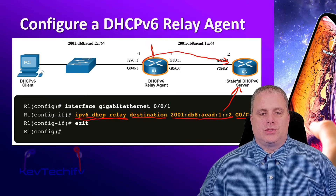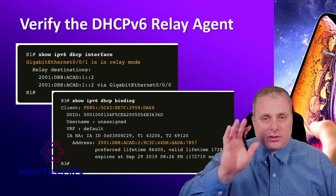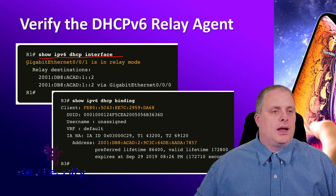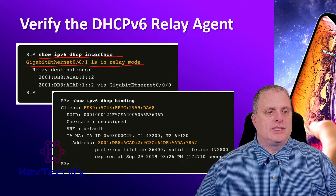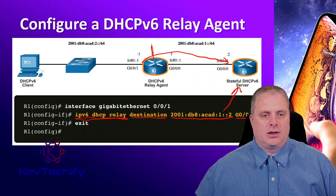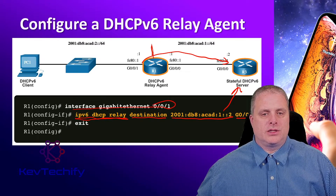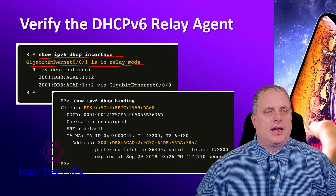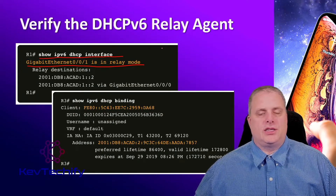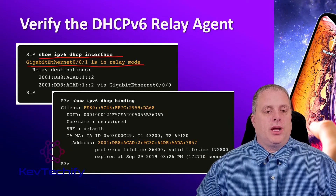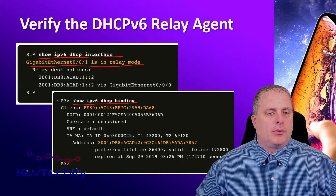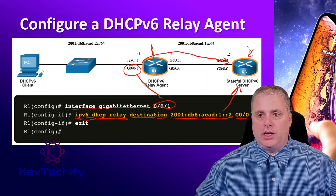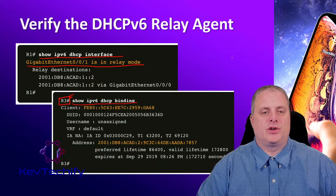To verify the relay agent on the router, we can use two commands. First, show IPv6 DHCP interface — this will say the interface is in relay mode. GIG0/0/1 is in relay mode, meaning it will relay DHCP requests to the server. The second command is show IPv6 DHCP binding — but notice this is on the router running the server, which is Router 3, the one running our stateful DHCP version 6 server.